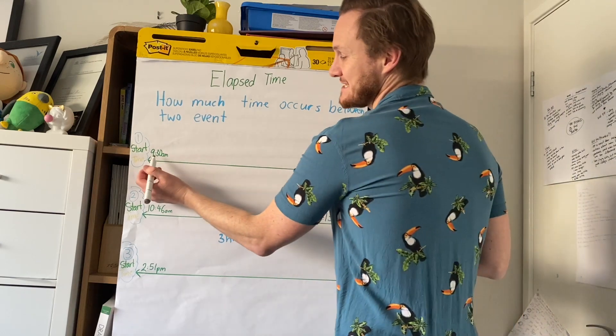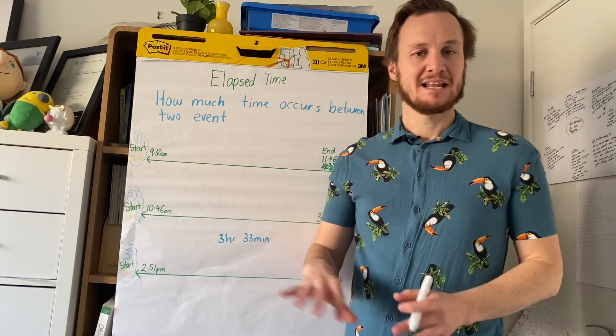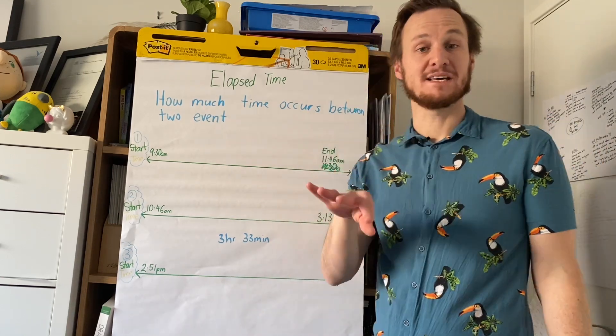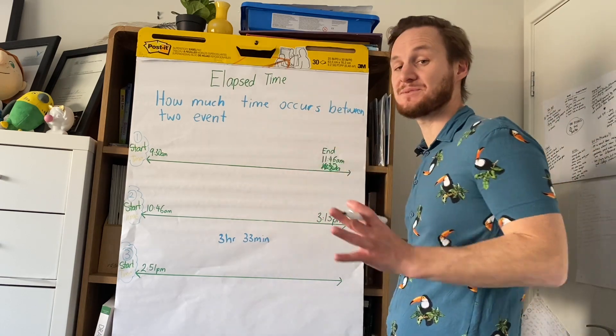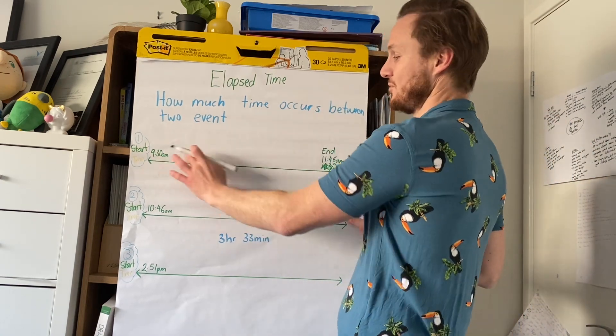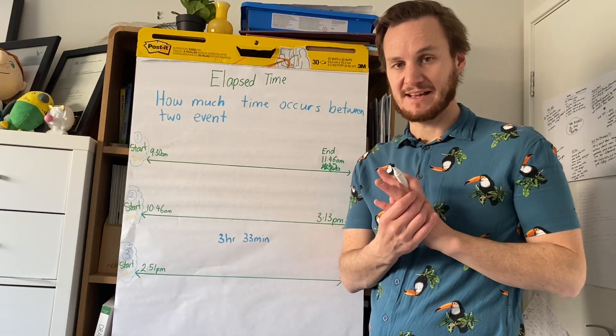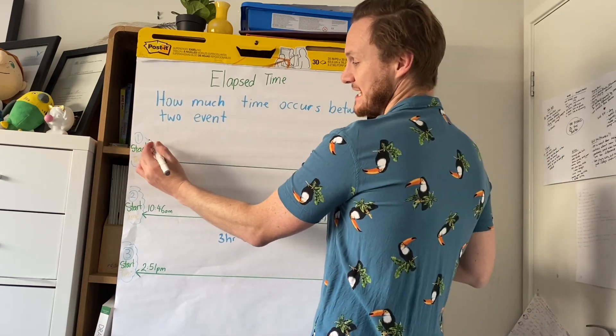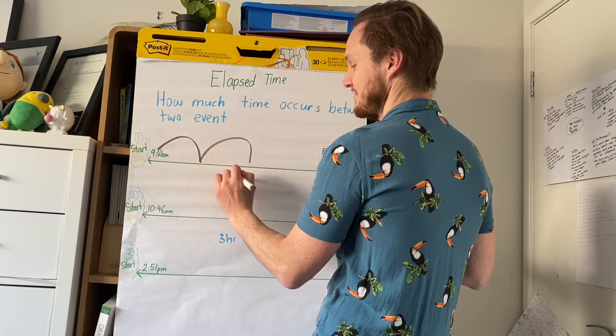So what I mean by elapsed time is how much time has occurred between two events. If you had an event starting at 9:30 and it ended at 11:46, how long did that take? Now this is easy and it's going to get harder, but the one thing I want to look at is there's different ways of doing it. Now you might be the sort of person - we're going to use the jump strategy - who wants to jump forward two hours and then jump forward the rest. But you might be the sort of person who might not find that very easy. So you could jump forward an hour at a time. So you could go 9:30, 10:30, 11:30, right?